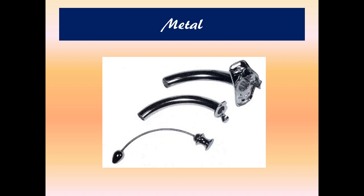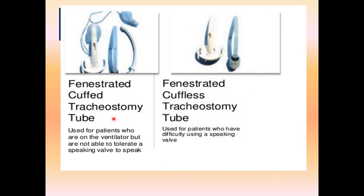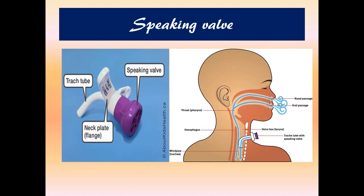Other types include the Bivona, which is uncuffed, and the Shiley tube, which comes in cuffless versions. Fenestrated tubes have visible openings called fenestrations. The metal Jackson tube is also available, which can be both fenestrated and cuffed, or fenestrated and cuffless.